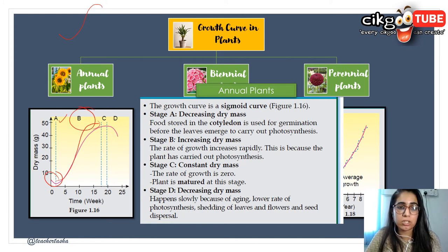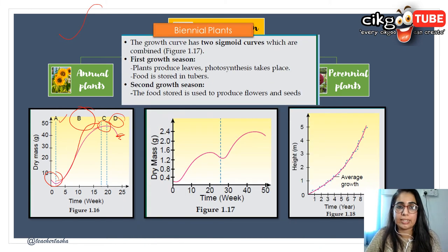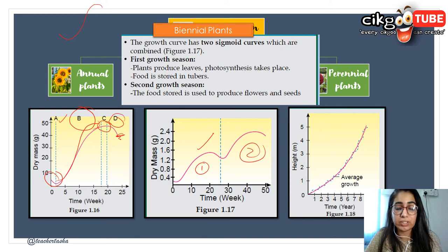In Stage C, the growth rate is constant — zero growth rate — and the plant is said to be mature. In Stage D, aging occurs with a lower rate of photosynthesis, shedding of leaves, flowers, and seed dispersal until the plant dies after one year. For biennial plants, there are two sigmoid curves — one for each season. The first growth season involves leaf production and photosynthesis, with food stored in tubers during vegetative growth. In the second growth season, the stored food is used to produce flowers and seeds.